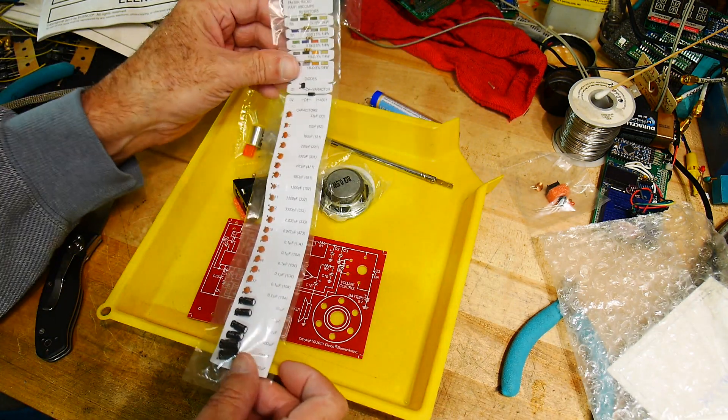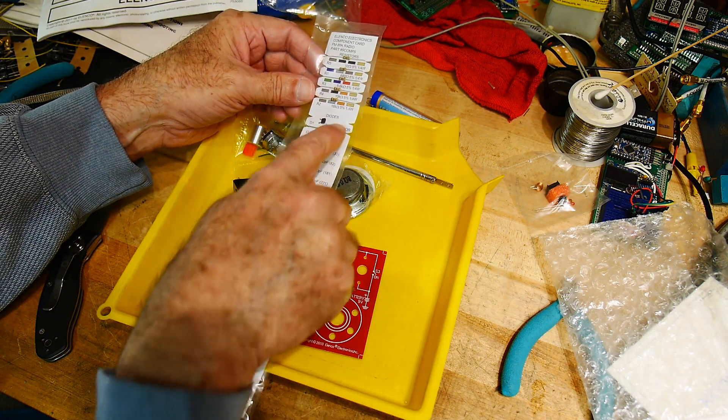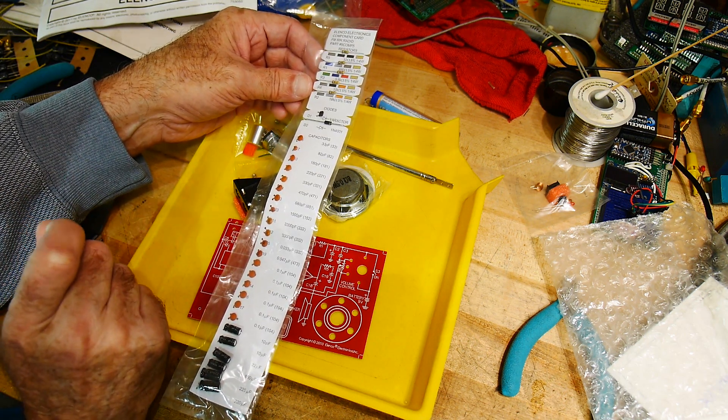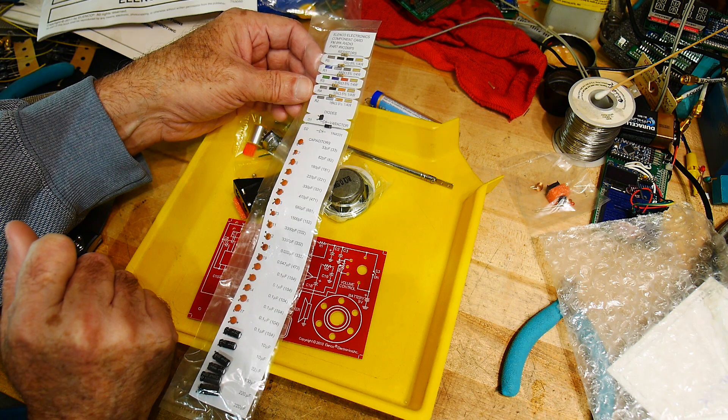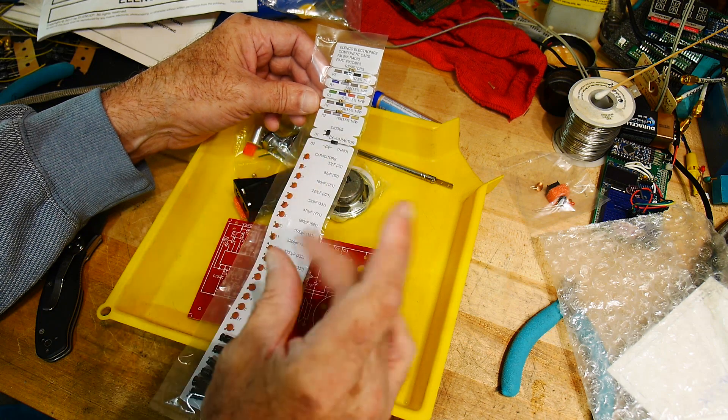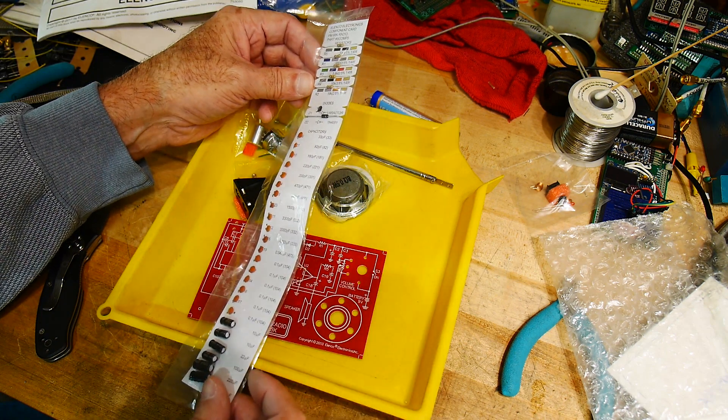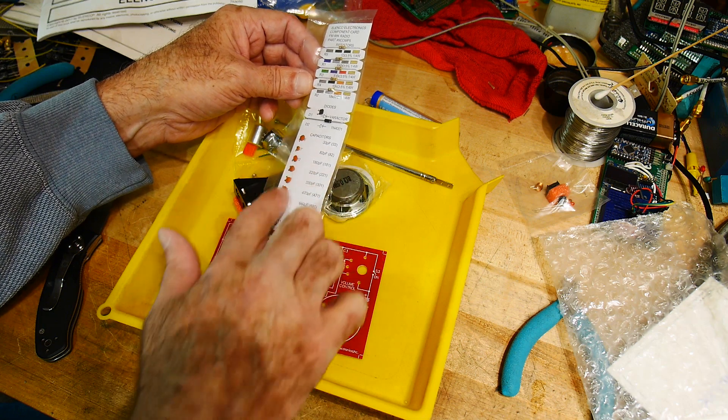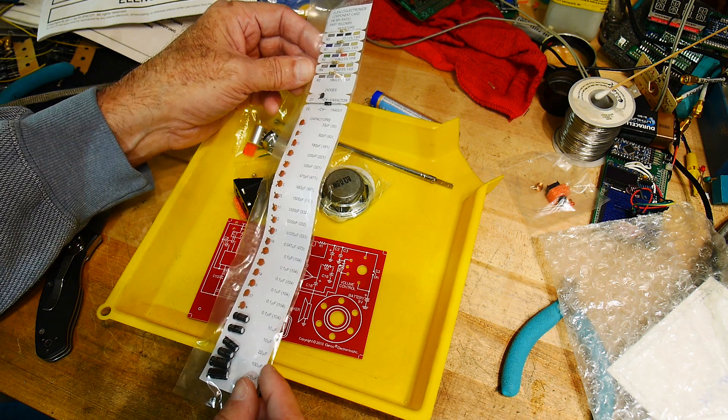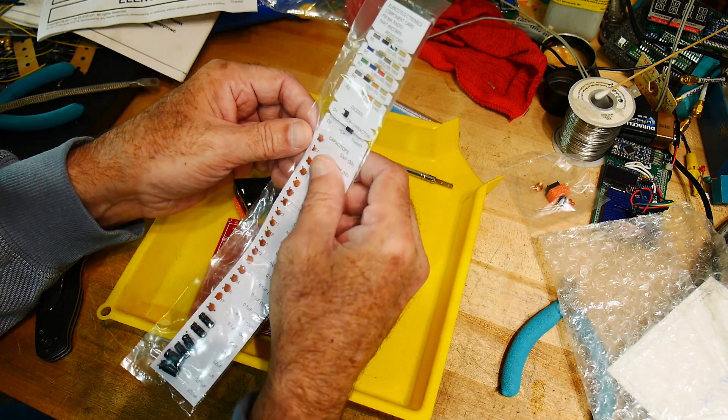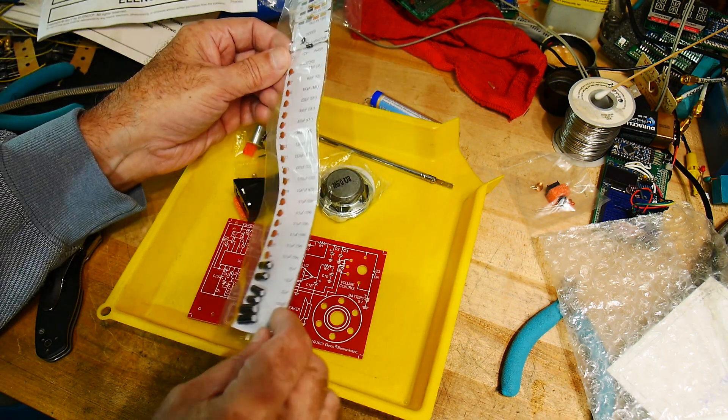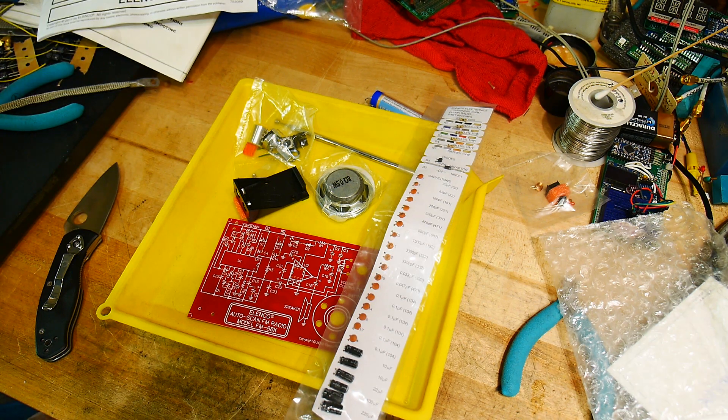Yeah, varactor diode. It's the variable capacitor. That's what sets the oscillator at different frequencies. Put a different voltage on it. Capacitance changes so it'll oscillate at a different frequency. And it's all cheapy ceramic capacitors. I don't think there's any NPO or anything like that in here. Although you never know. Let's get it going here.